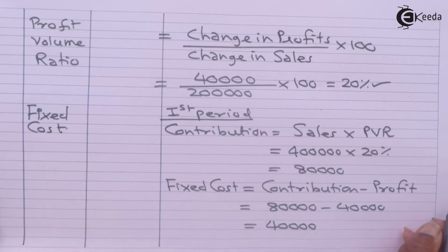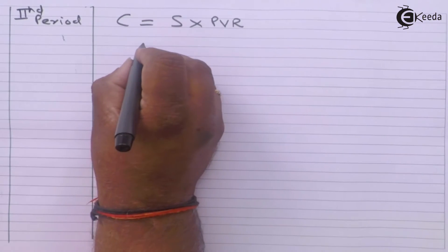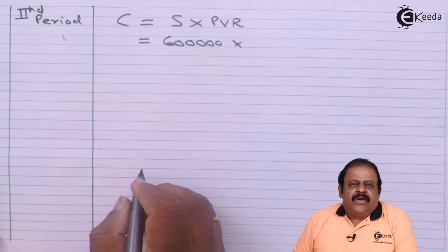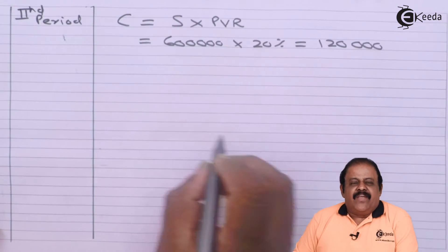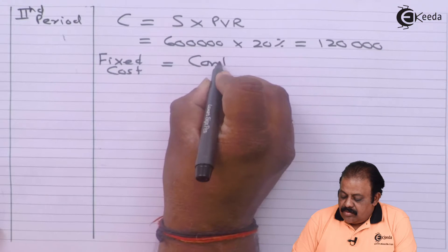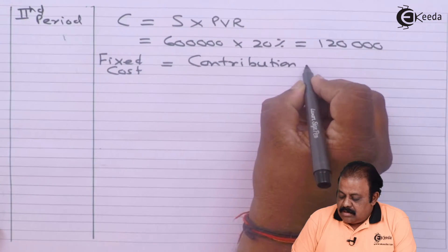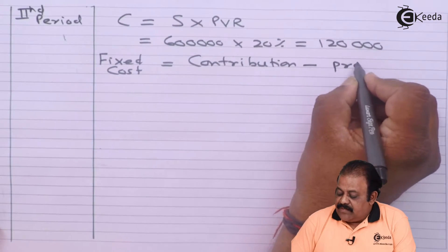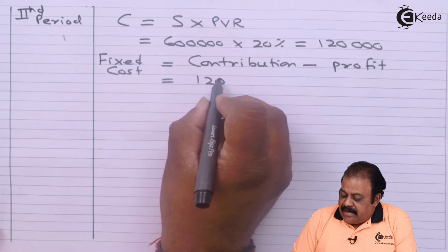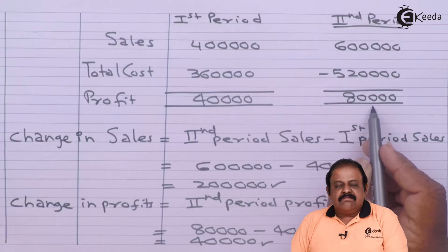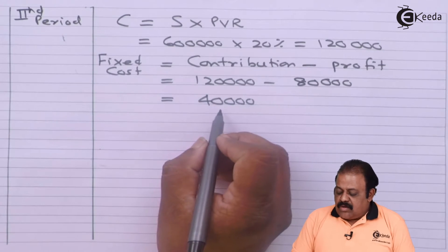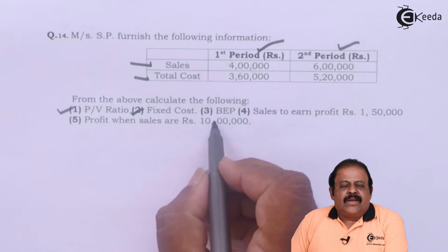We can verify this with the second period. Contribution equals six lakhs multiplied by twenty percent, which equals one lakh twenty thousand. Fixed cost equals contribution minus second period profit: one lakh twenty thousand minus eighty thousand equals forty thousand. The fixed cost is confirmed as forty thousand for both periods.